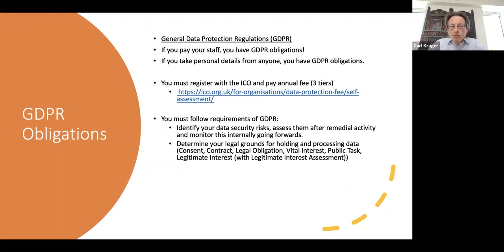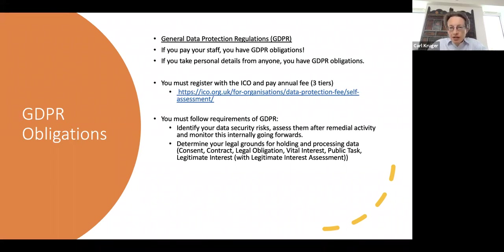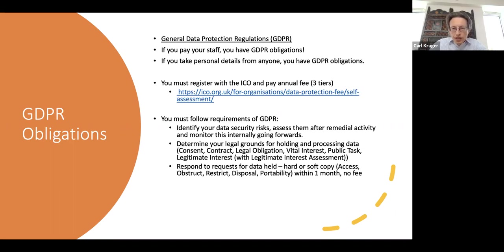GDPR relates to personal data specifically. There are other requirements on non-personal, i.e. corporate, data which we'll come onto in a minute. Personal data includes name, address, age, and then more intriguing categories — sexuality, political affiliations, education, and so on. You need to be clear on which legal ground you are applying for every single data type, and have the evidence to show that you have considered this properly.